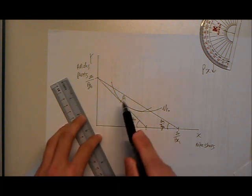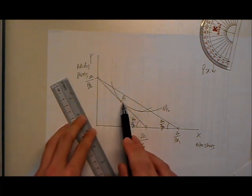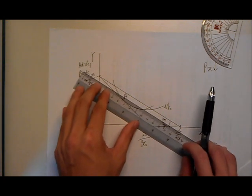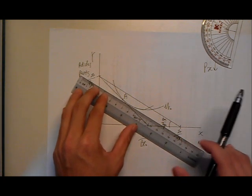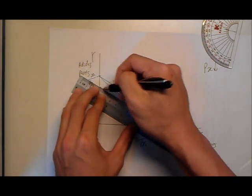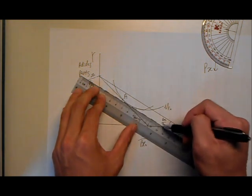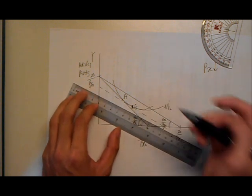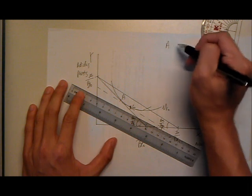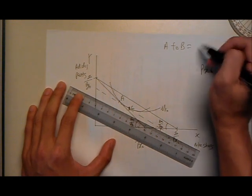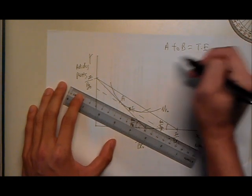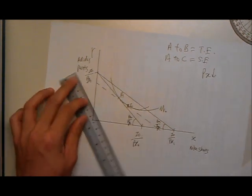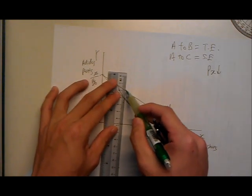Let's identify the substitution effect first. This is point A, our initial point. The first step is to draw a parallel line which is tangent to the indifference curve, and we label this point C. You may be asking where is B. A to B gives us the total effect. A to C gives us the substitution effect.